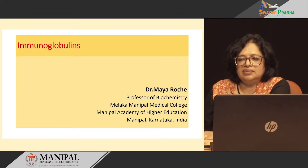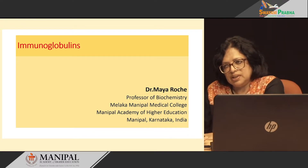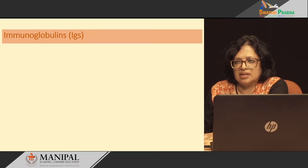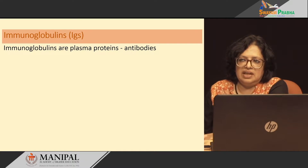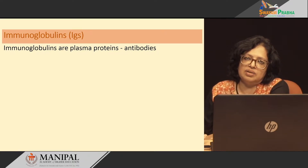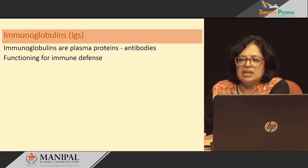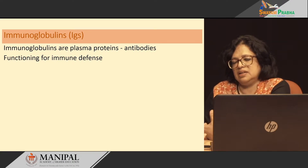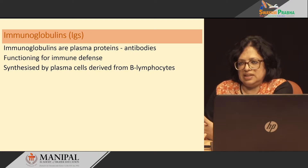Hello everyone. In this video, I am going to talk about immunoglobulins. Immunoglobulins are also plasma proteins and they are commonly called as the antibodies. They function as immune defense mechanism in the blood, synthesized by plasma cells and derived from B-lymphocytes.